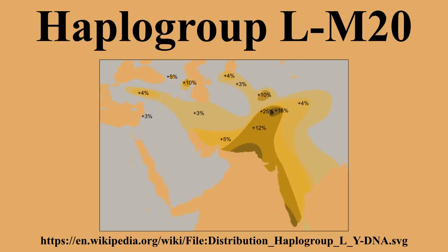2013: L3A is found at 23% among the Nuristanis in both Pakistan and Afghanistan. L Pk3 is found in approximately 23% of Kalash in northwest Pakistan.